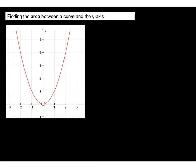We're going to start off by looking at how we can calculate the area between a curve and the y-axis. This is the area we are going to calculate — I'll highlight it in green. As you can see, it's bound by the curve y equals x squared and the y-axis. One way to do this is to find the blue region, which is the area trapped by the curve and the x-axis, and then subtract that from the area of this rectangle.